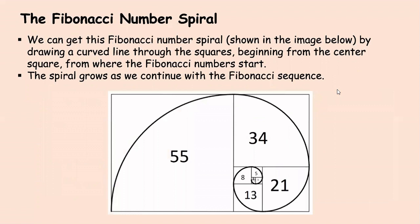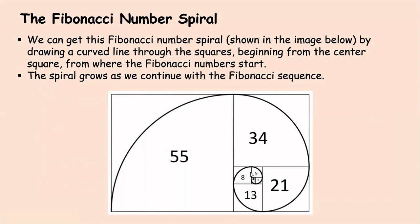Now let's learn a little bit about the Fibonacci number spiral. We can get this spiral — does it look familiar? — by drawing a curved line through the squares beginning from the center square, where the Fibonacci numbers start. The spiral grows as we continue the Fibonacci sequence. If we count the boxes and see what numbers are inside them, they are 1, 1, 2, 3, 5, 8, 13, 21, 34, and 55. And if we draw a line from the first one growing through the boxes, we get a big, beautiful spiral.